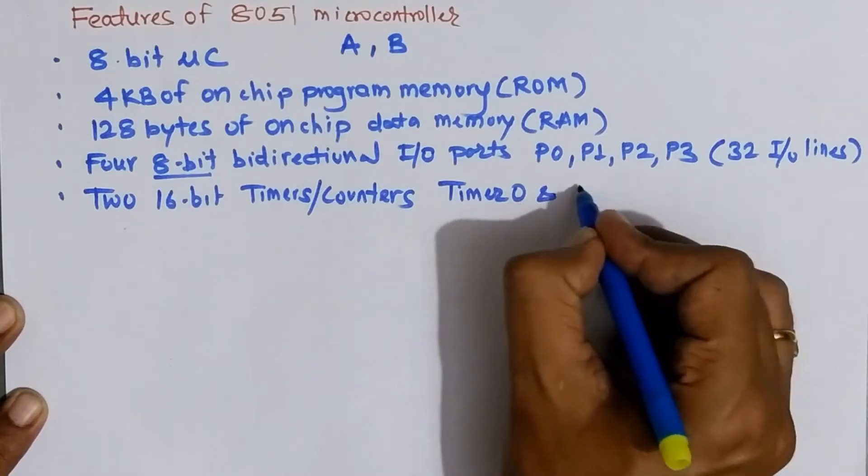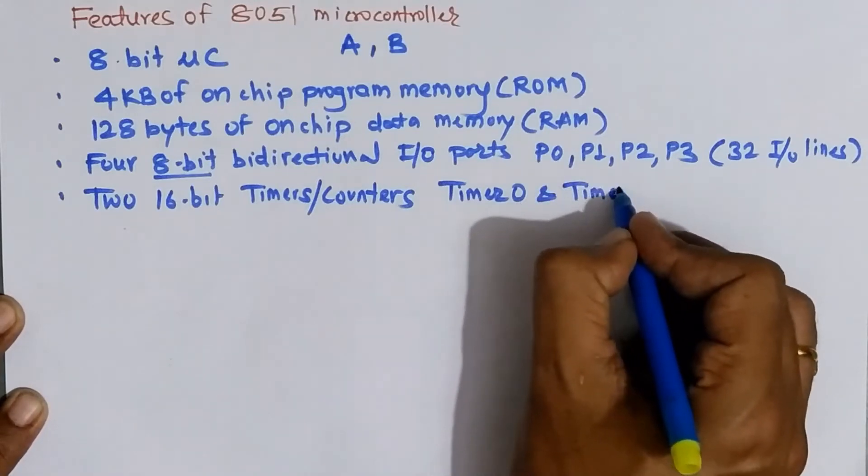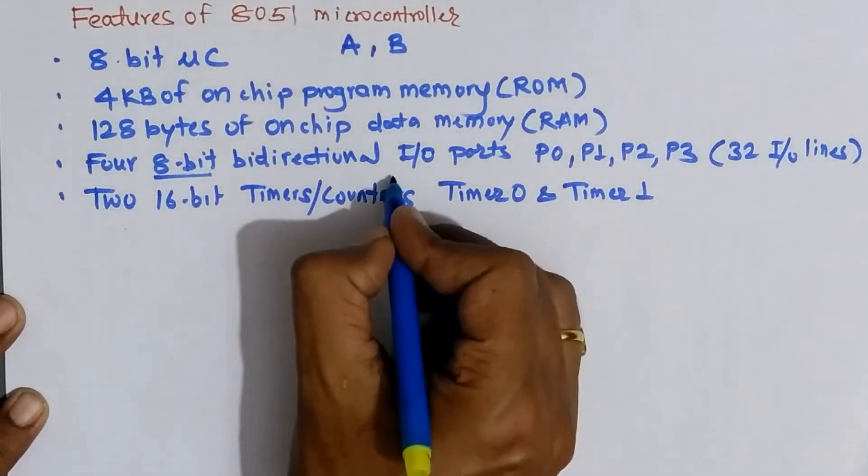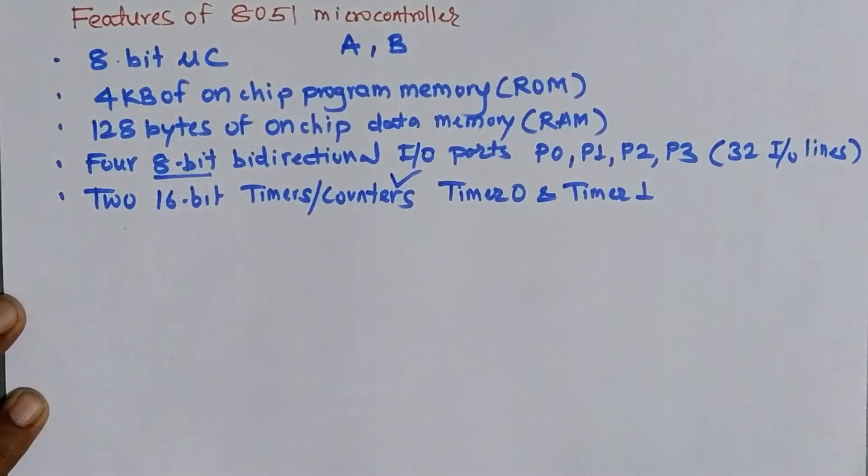Similarly, the second timer is called as timer 1. Now what is the application of timer? Timer is used to generate a delay. A delay means it is creating some time gap between two different events.